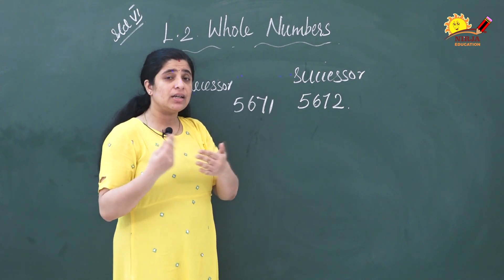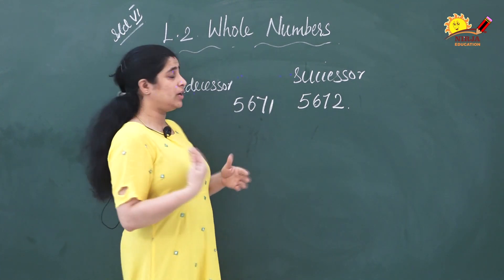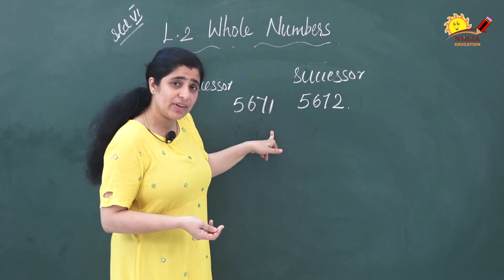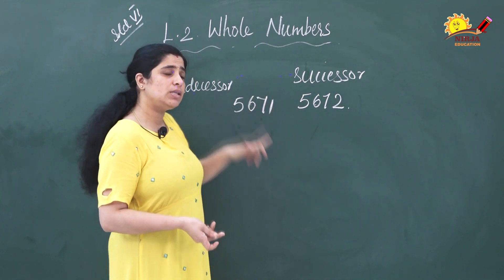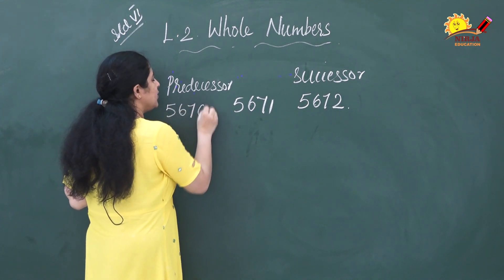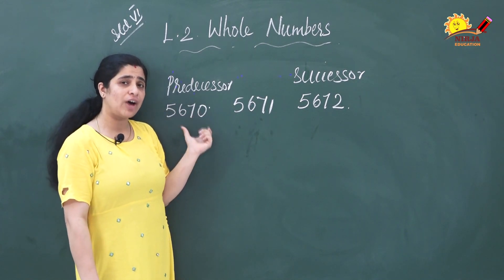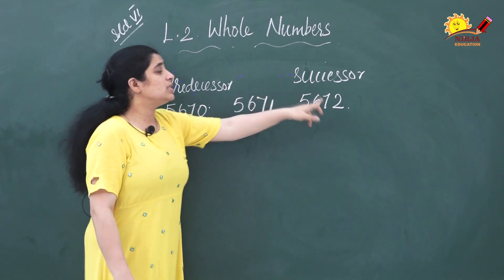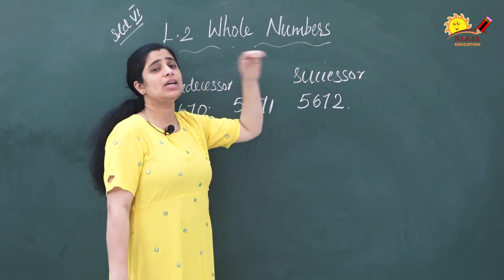Now what is predecessor? The predecessor is the number that comes just before the given number. That means you subtract 1 from the given number 5671. 5671 − 1 = 5670. So 5670 is the predecessor of 5671, and 5672 is the successor.